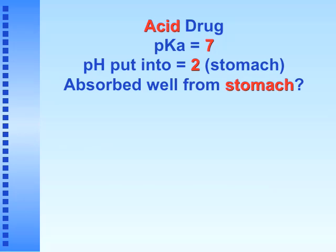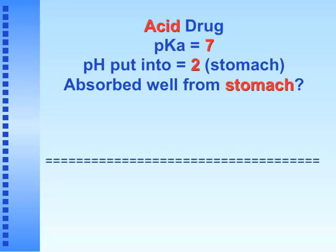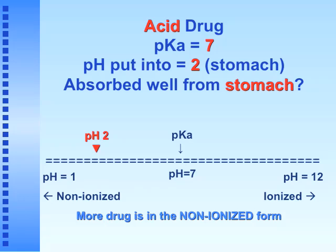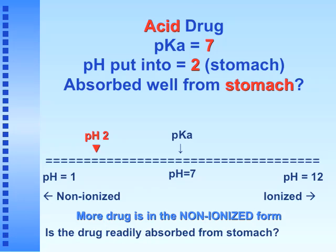Quick practice problems. Problem 1: acidic drug, pKa = 7, placed into the stomach at pH 2. On a pH scale of 1–12, pKa = 7 marks the 50-50 point; at pH 2 more drug is in the non-ionized form. Is the drug readily absorbed from the stomach? Yes — because it can cross the lipid membrane.